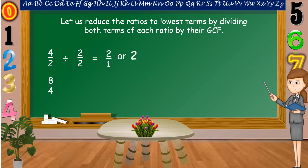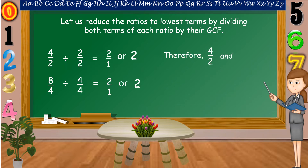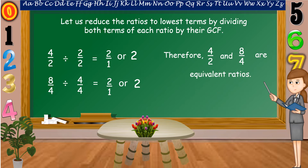Another ratio: eight-fourths. The GCF of eight and four is equal to four. So we're going to divide it by four. Eight divided by four is equal to two, and four divided by four is equal to one. The simplest form of two over one is equal to two. Four-halves and eight-fourths have the same lowest term, which is equal to two. Therefore, four-halves and eight-fourths are equivalent ratios.